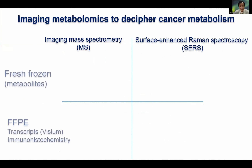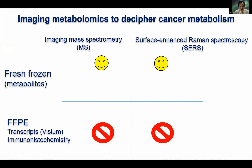Let me briefly explain what imaging metabolomics is. There are two different methodologies for imaging metabolomics, which capture the spatial information of many metabolites from frozen tissues. When you think about histology, the sample should be fresh frozen for imaging metabolomics. On the other hand, many people utilize formalin-fixed paraffin-embedded samples, that is called FFPE.